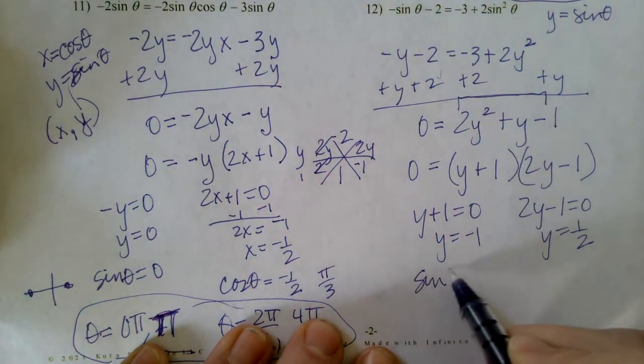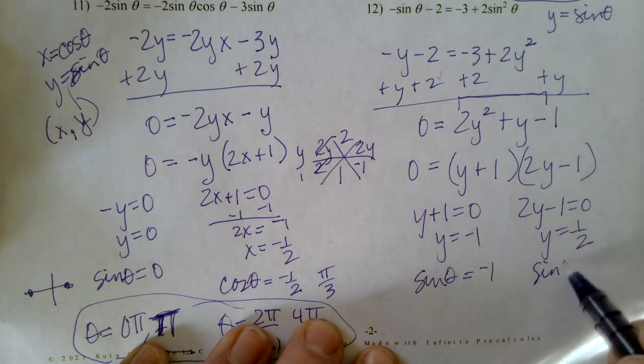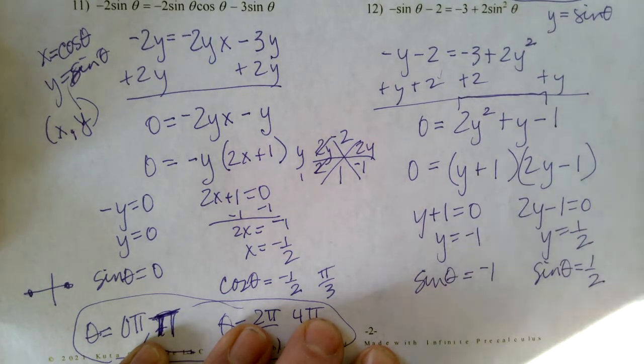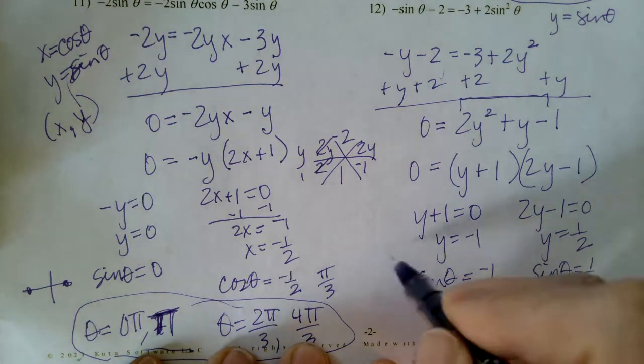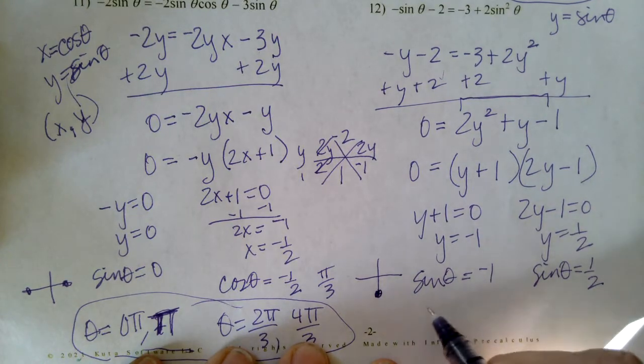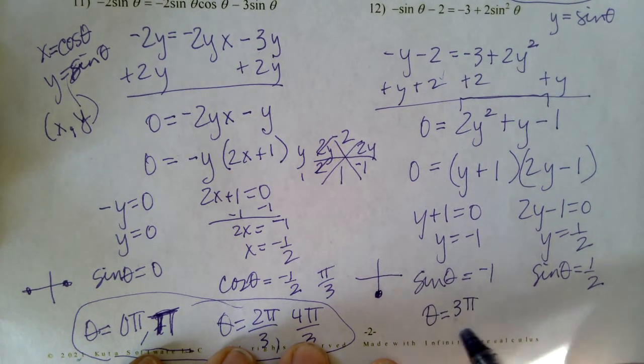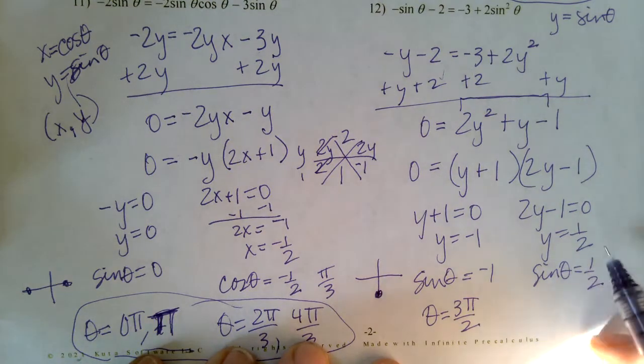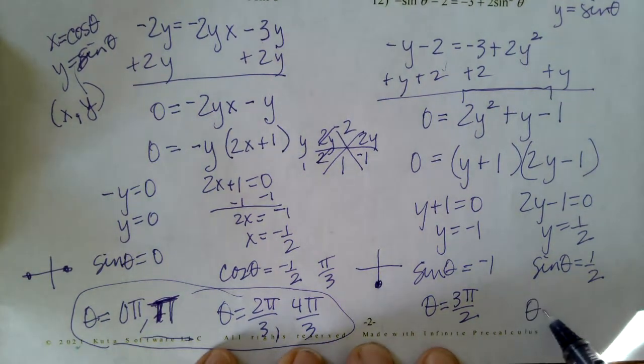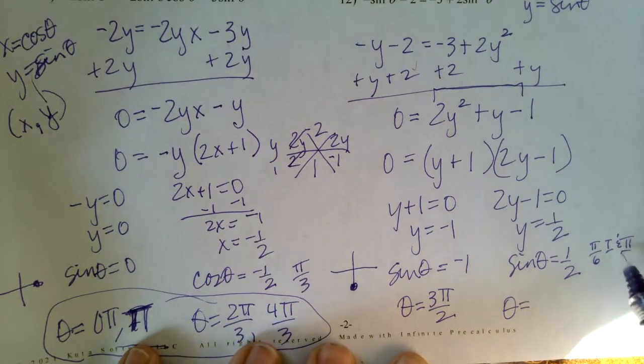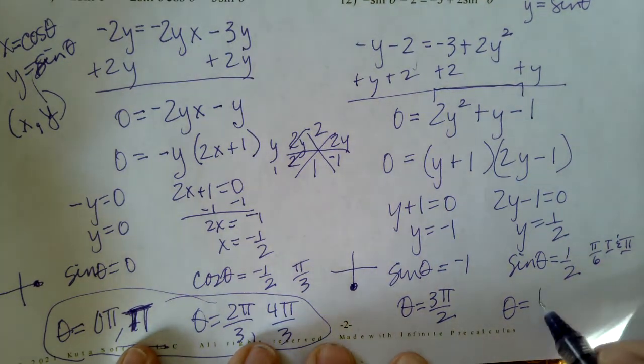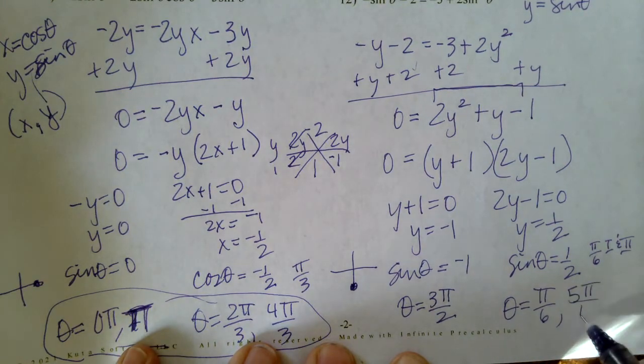Again, I'm not solving for y, I'm solving for sine. So when is the sine negative one and when is the sine one half? And the sine is negative one down here, so that's at three pi over two. And the sine is one half in the pi over six family and in the first and second quadrant. So that's pi over six and five pi over six.